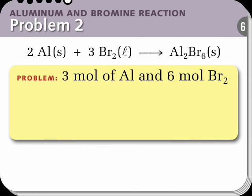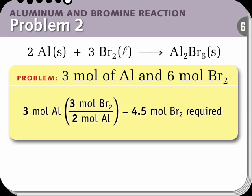Let's look again at the reaction of aluminum and bromine, this time with three moles of aluminum and six moles of bromine. Three moles of aluminum require 4.5 moles of Br2 based on the stoichiometric factor. But we have six moles available, so bromine is present in excess. Therefore, the limiting reactant is aluminum.